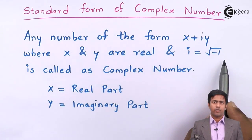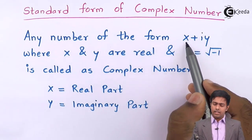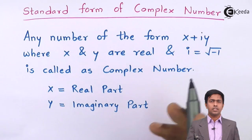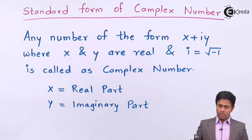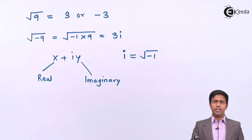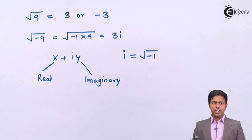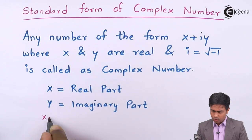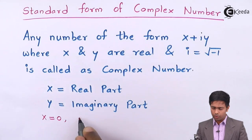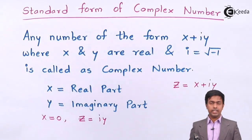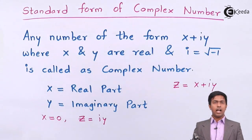The value of i is square root of minus one, and such a number is called a complex number. In this, x is called the real part and iy is called the imaginary part, because it is always preceded by the i symbol. In our example we got 3i — there is an imaginary part but no real part. Whenever the real part x is zero, the complex number z equals iy, which is only an imaginary part. Such a number is called a purely imaginary number.